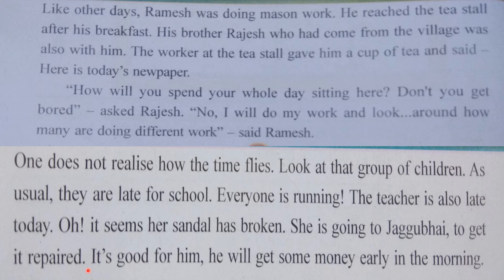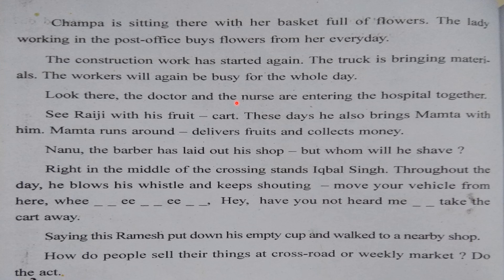Children, I am reading this and you should observe the textbook images too so that it will be easy for you to correlate. It's good for Chagubai — he will get some money early in the morning. Chagubai is a cobbler who can repair the sandal. Chagubai is sitting there with her basket full of flowers. The woman sitting near the tea stall — as we discussed earlier — the lady working in the post office buys flowers from her every day.